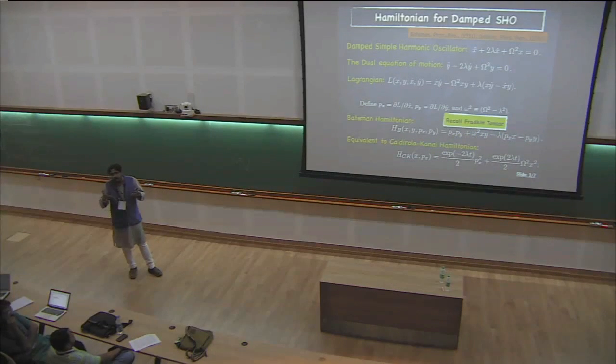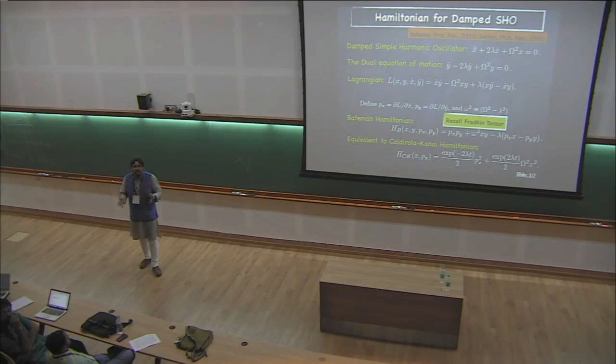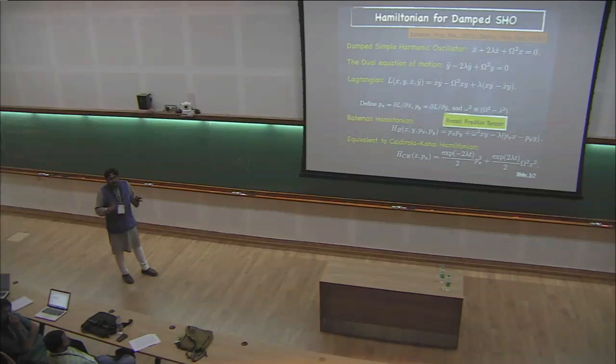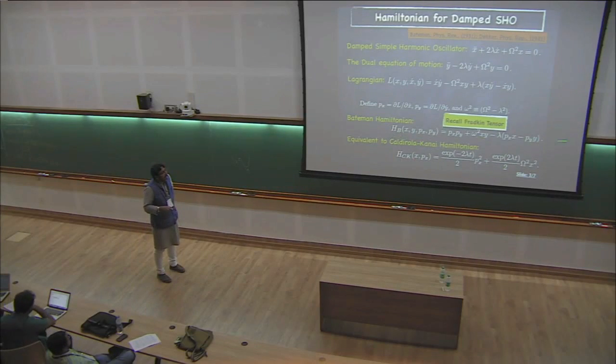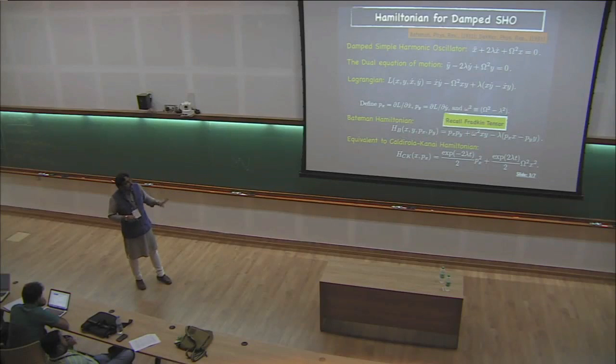The Hamiltonian which we usually write, kinetic energy plus potential energy, is not quite unique for certain systems. You can write other Hamiltonians also. There may be associated problems of boundedness, but it works. This Hamiltonian can be shown to be equivalent to what is known as Caldirola or Kanai Hamiltonian, which happens to be time-dependent Hamiltonian, by a series of canonical transformations. But this is time-dependent, I'm not really interested with that. I want to work with a time-independent Hamiltonian.